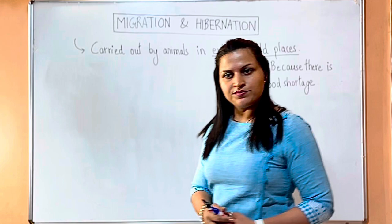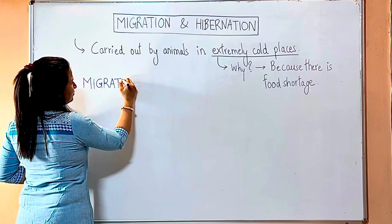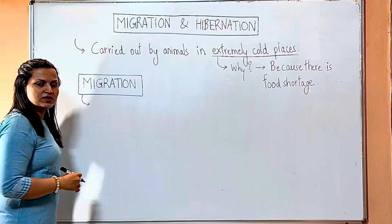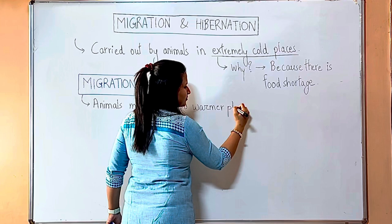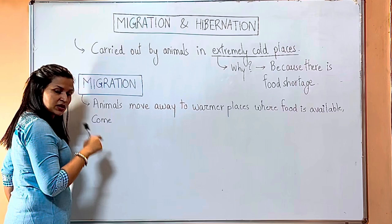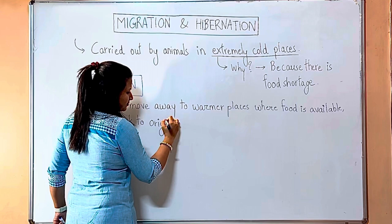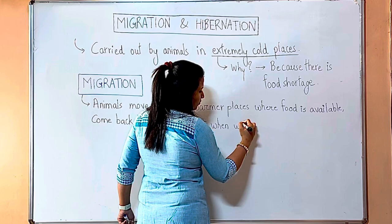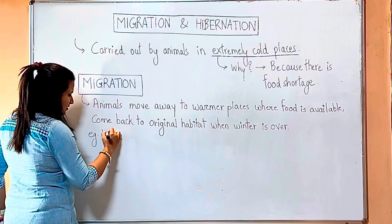In the case of migration, animals move away to warmer places where food is available. They make sure they don't just stay in the warmer place all year round — they return to their original habitat when winter gets over. Examples of migratory animals include whales and butterflies.